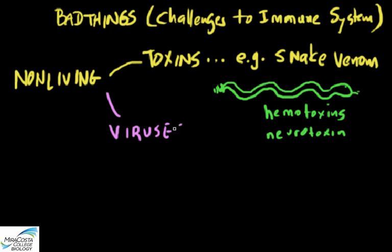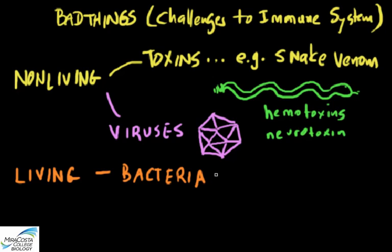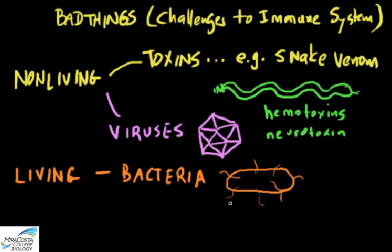Viruses are also non-living, but they use your host cell to self-replicate and end up multiplying inside your body if you're infected, so many people think of them as kind of like living things. Viruses are made out of proteins and nucleic acids—the same kinds of molecules found in living cells. Then there are living things that can cause disease. Bacteria are prokaryotic cells, and while most don't pose any real risk, some are specialized on penetrating and infecting living things, multiplying, and having billions of cells escape to infect other hosts. These are the pathogenic bacteria that cause transmissible disease, like Streptococcus.